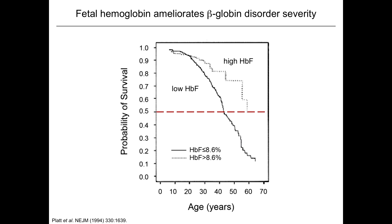Patients with the beta globin disorders are actually born healthy and only develop disease during the first year of life. There's abundant genetic, biochemical, and epidemiologic data indicating that fetal hemoglobin can ameliorate these beta globin disorders.